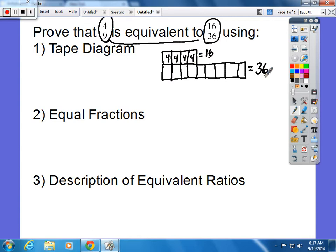36 divided by 9 is also 4, so 4 is going to go in every box as well. Now, because all of these boxes have the same number in them, these two fractions, or ratios, are equivalent.